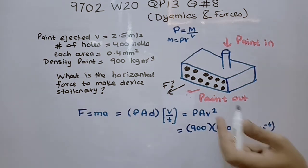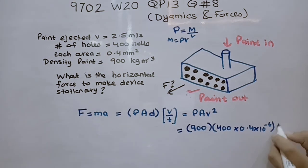And velocity is 2.5 square. So calculating this through our calculator, we get 0.90 Newton.